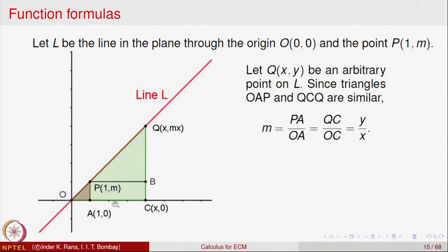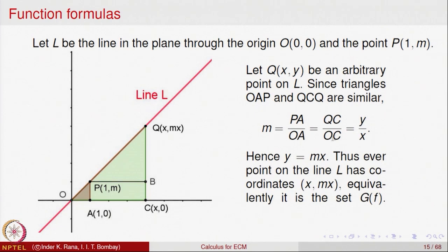Since these two triangles are similar, the sides must be in proportion. The ratio PA by AO equals m, which must equal the ratio QC divided by CO, and that ratio is y by x because Q has coordinates (x, y). From this we get that y must equal mx. Thus every point on the line has coordinates x comma mx, which identifies with the graph of the function. This shows that the line L is the graph of the function y equal to mx.